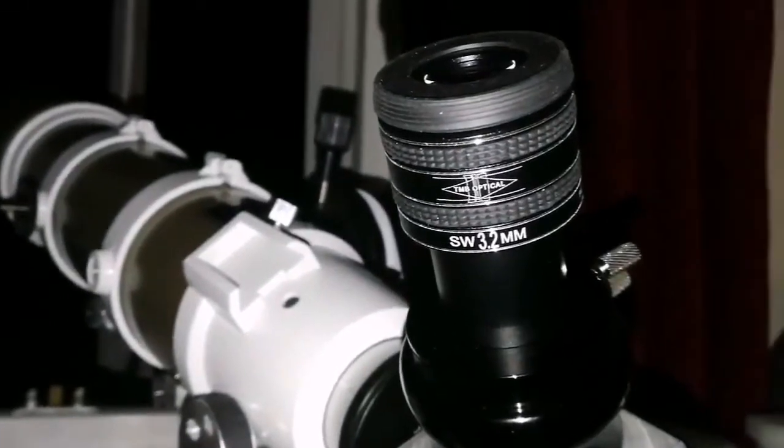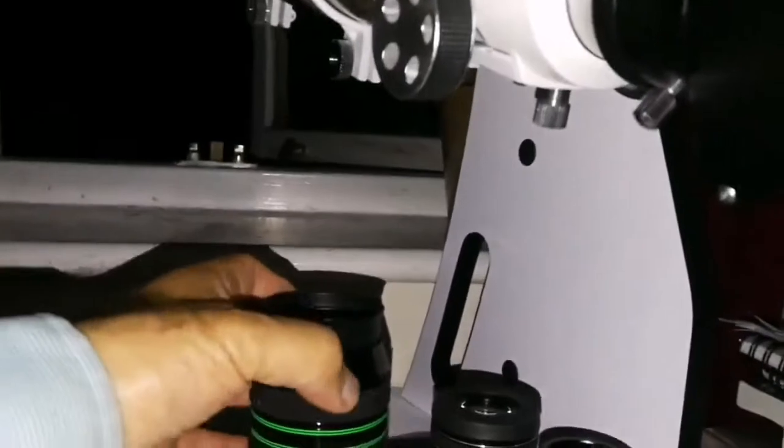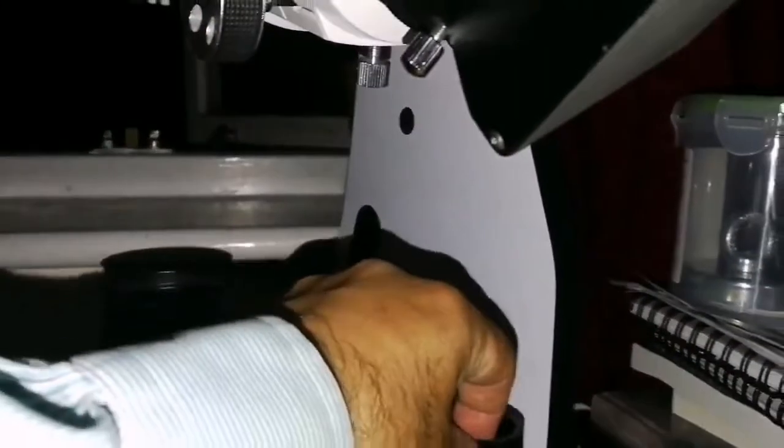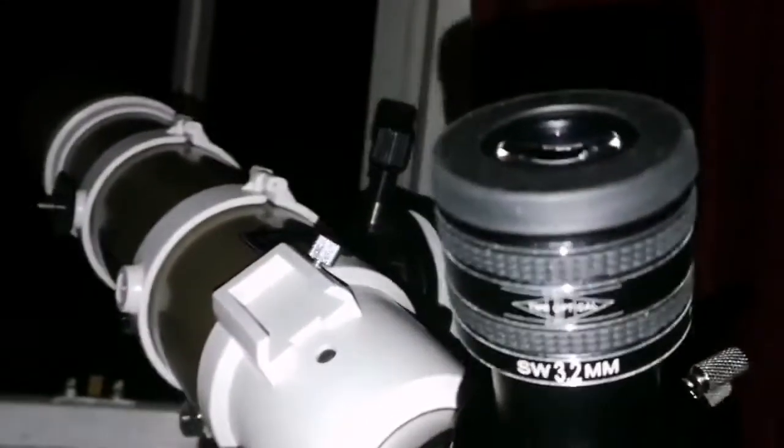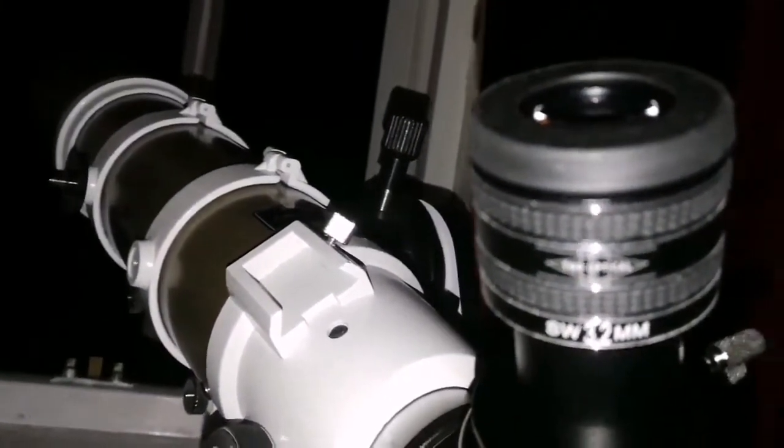I was watching the planet Jupiter and I was using this Delos 14mm with the Barlow Celestron Ultima series Barlow. And I changed to this TMB planetary 3.2mm.